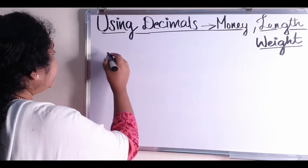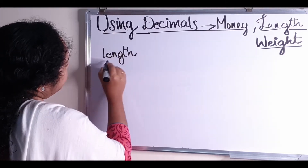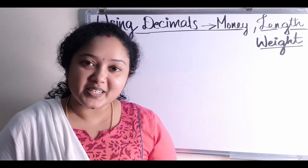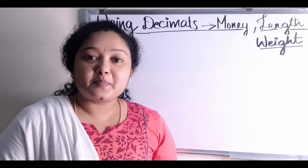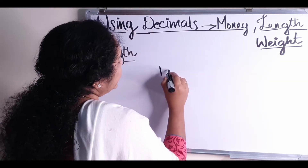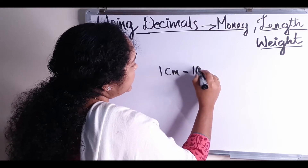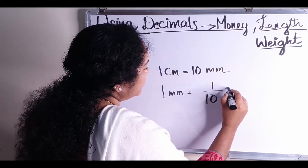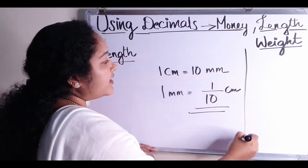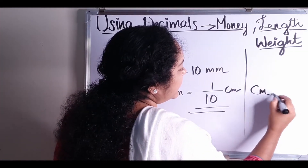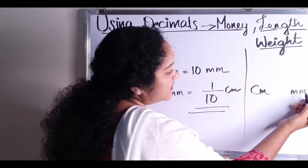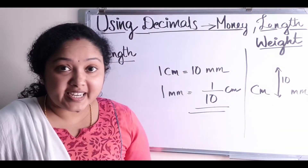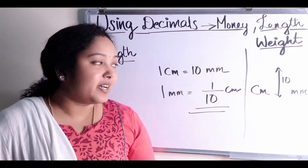Next we find length using decimals. The units of length frequently used are millimeter, centimeter, meter, and kilometer. First, millimeter and centimeter: 1 centimeter is equal to 10 millimeters. 1 millimeter is equal to 1 by 10 centimeter. Easy to remember: centimeter is greater than millimeter, and their power of relation is 10. So to convert to centimeter, divide the number by its power of relation, 10.